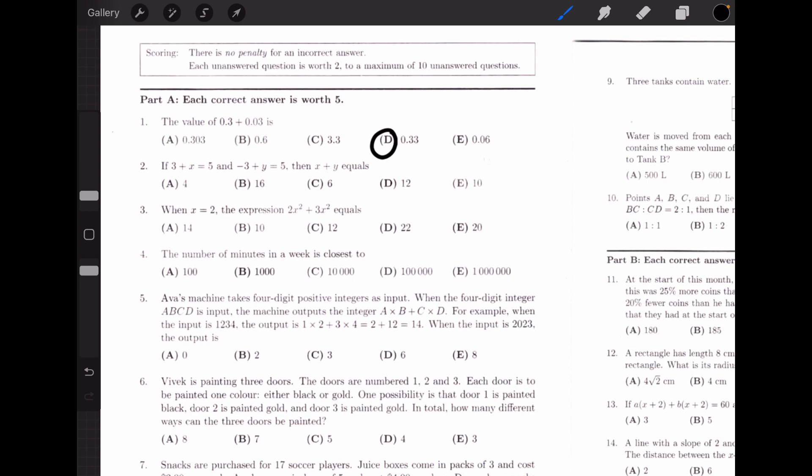Number 2, if x plus 3 equals 5 and negative 3 plus y equals 5, what's x plus y? For this question we can add the equations together which gives us 3 plus x minus 3 plus y equals 5 plus 5. Because 3 and negative 3 cancel out, we are left with x plus y equals 10. Therefore the answer should be E.